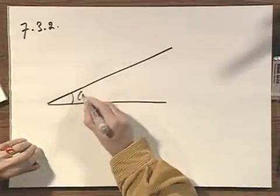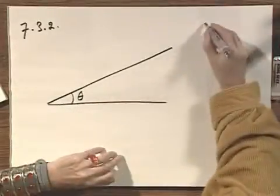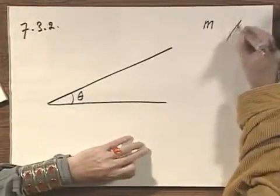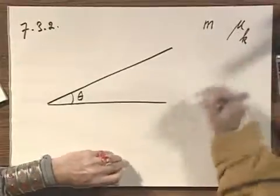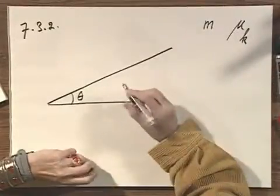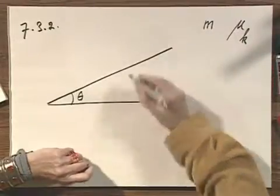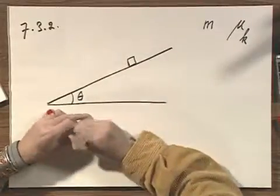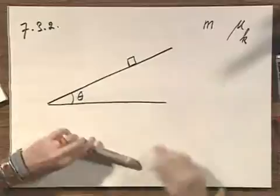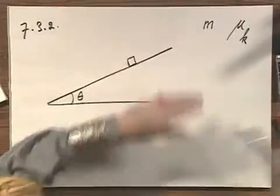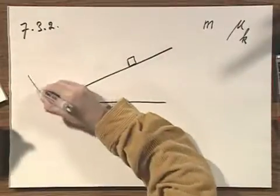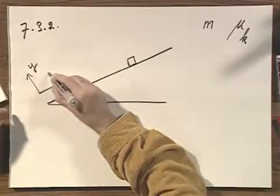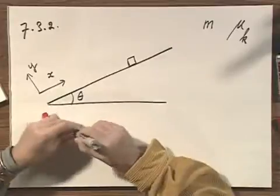The slope is at an angle theta. The mass that I'm pulling up is m, and the kinetic friction coefficient is mu k. Here is that object, and I'm pulling it, and the speed along this line is constant. Let's call this the direction y, perpendicular to the slope, and let's call this x, the direction along the slope.